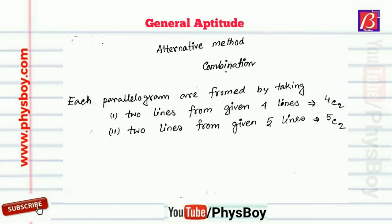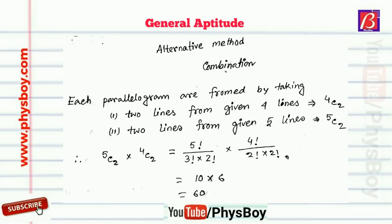The total number of ways to choose two parallel lines from the set of four is 4C2. The total number of ways to choose two parallel lines from the set of five is 5C2. Combining these, we get 5C2 × 4C2 parallelograms in total. Simplifying this gives 60, so finally 60 parallelograms are formed.